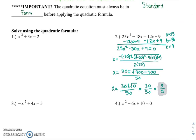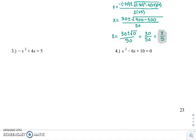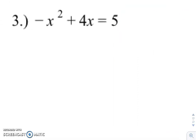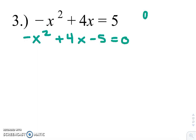So let's go down and look at number three. So again, make sure it's equal to zero. So -x² + 4x - 5 = 0. So we have our a, even though you don't see it, it's a one, so -1. b is 4, and c is -5.